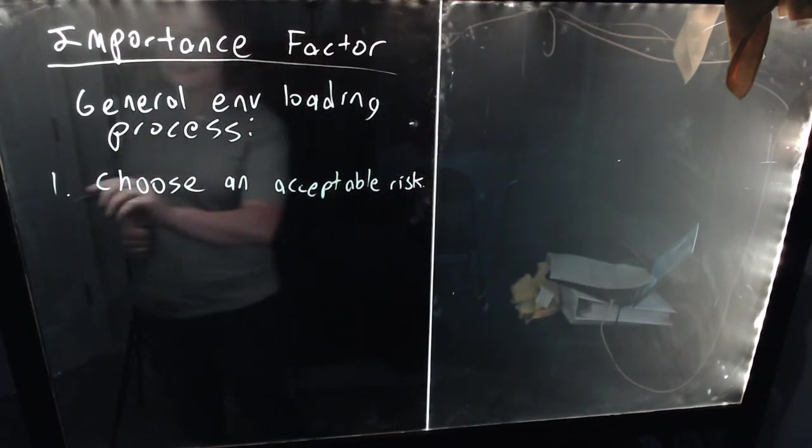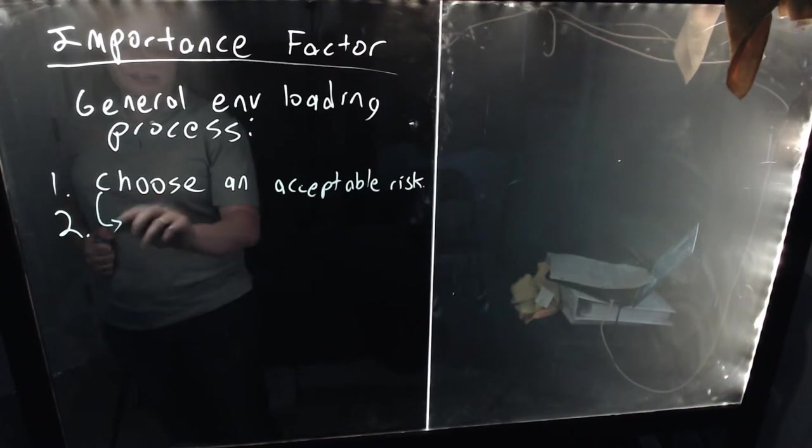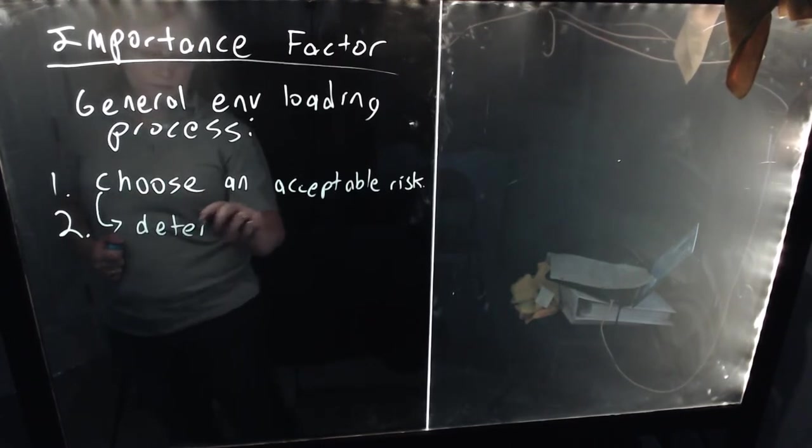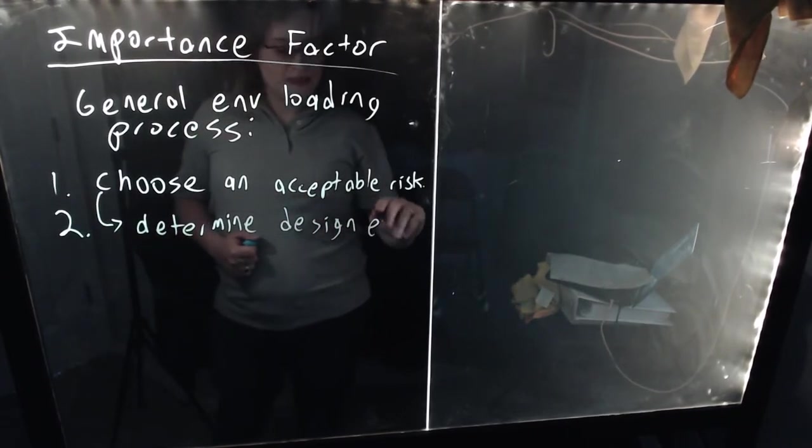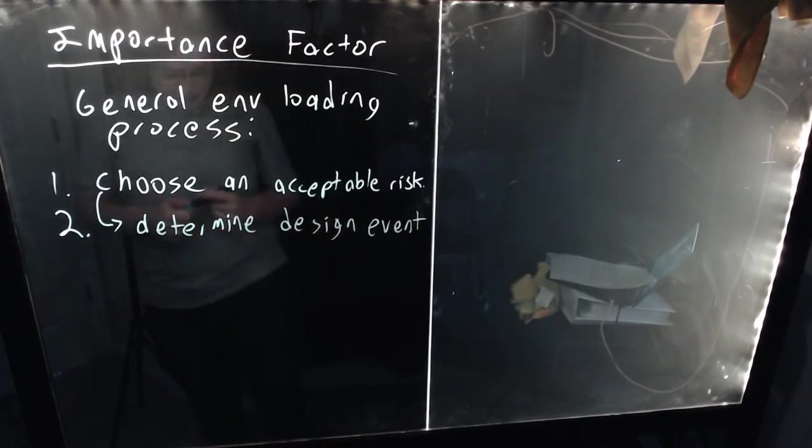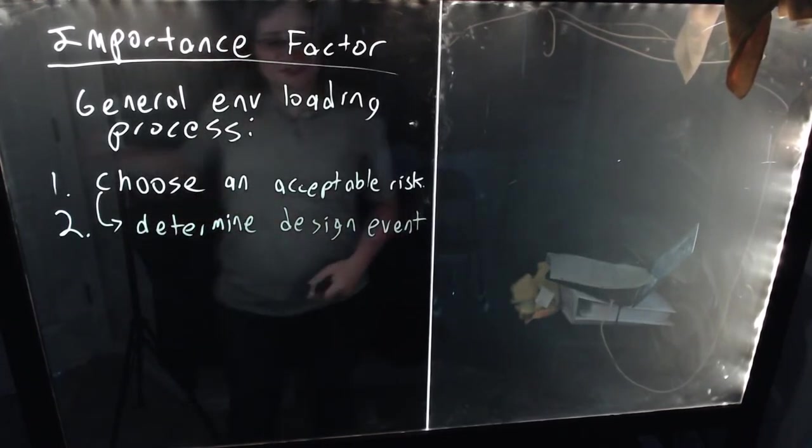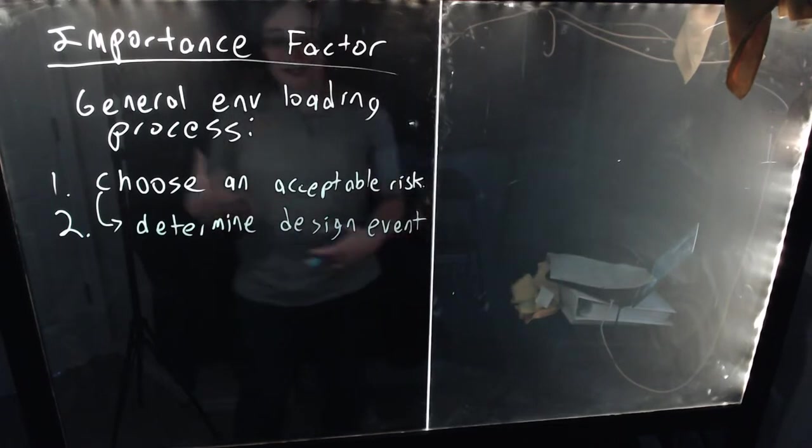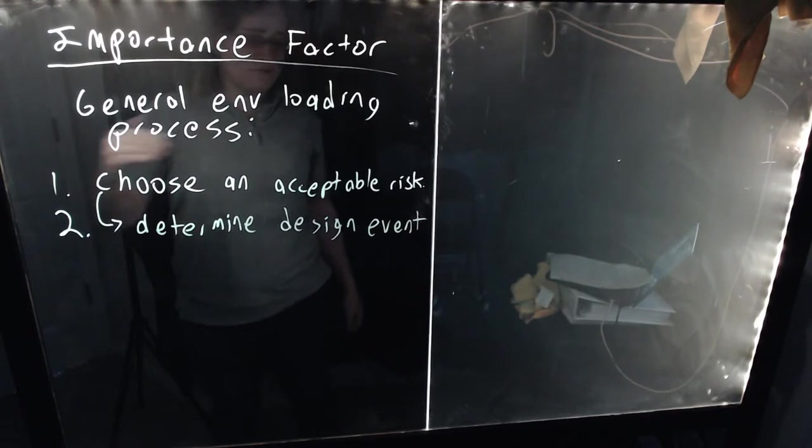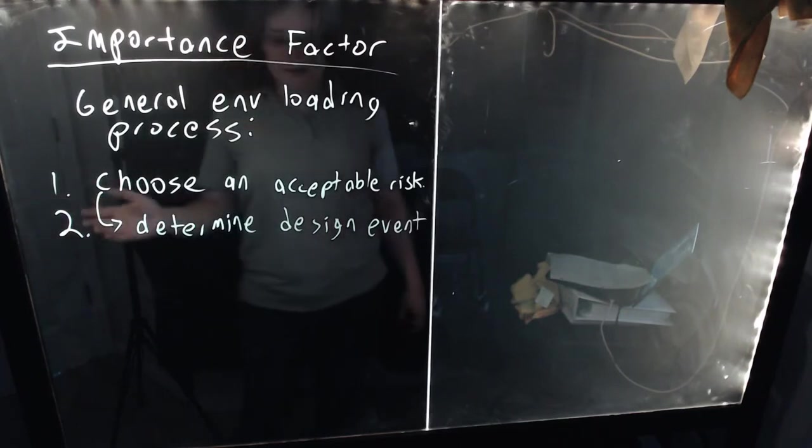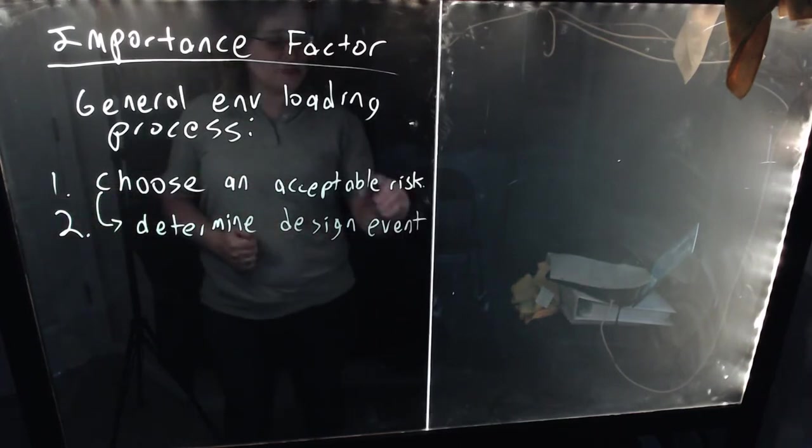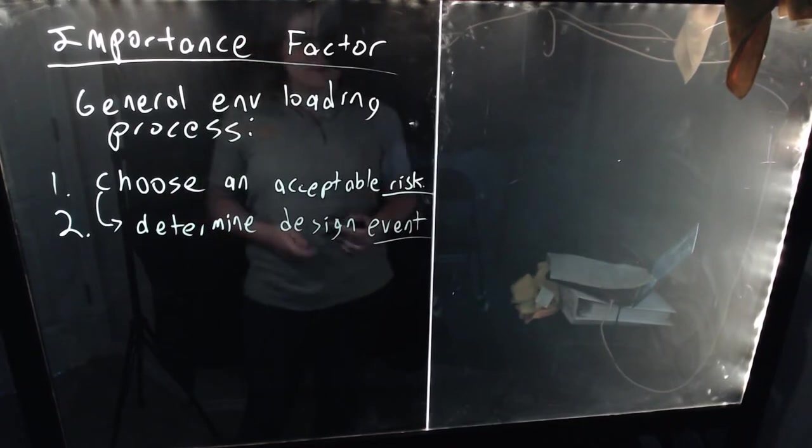And based on that risk, you determine a design event. This design event could be a storm, a rainstorm, a snowstorm, a windstorm, a hurricane, it could be an earthquake, it could be whatever your environmental threat is. You're going to go back and look at historical data, you'll get past seismic data, you'll get past weather data.